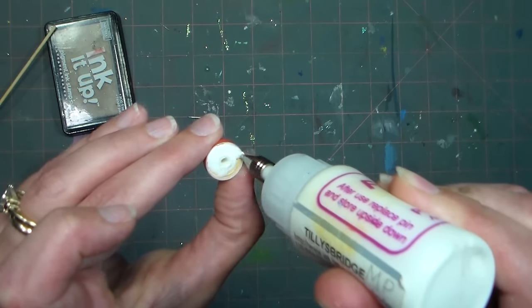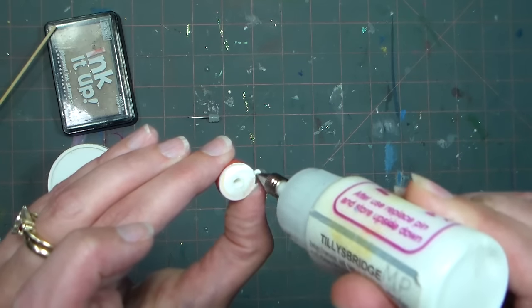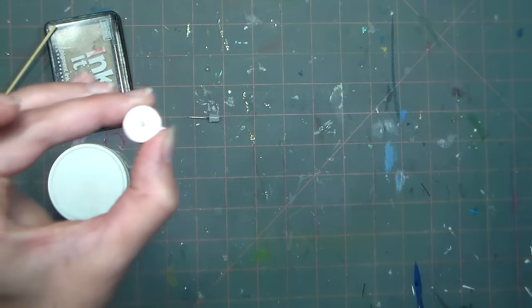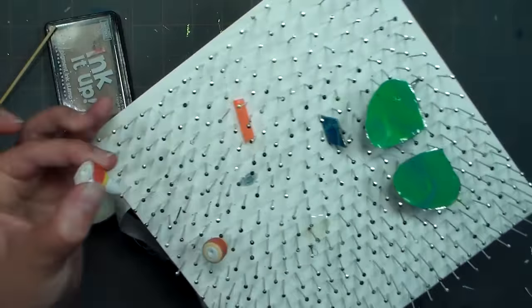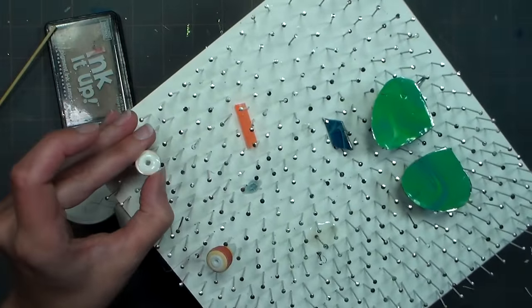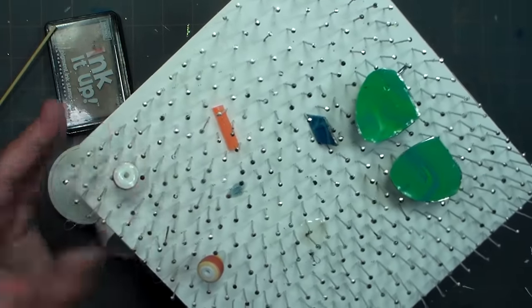One other thing I like to do to protect the bead and keep it from shifting is on the end here, I fill this right up with my glue. I don't do the inside of the bead because I'm afraid I would close the hole up by mistake, but I do seal up all these ends.